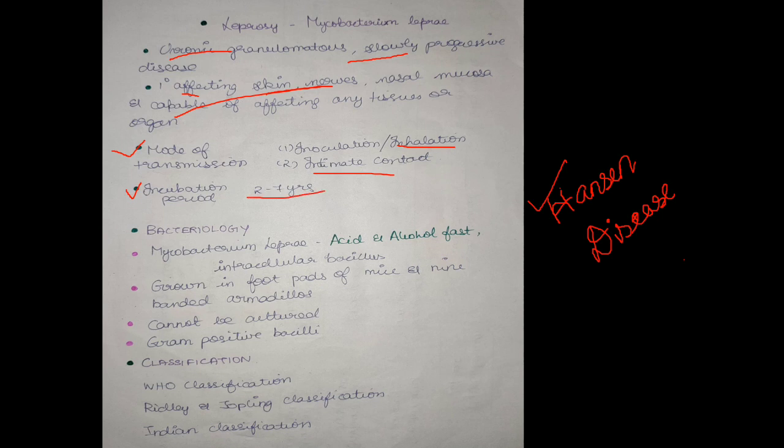Bacteriology: It is caused by Mycobacterium leprae, which is acid as well as alcohol fast, a differentiating factor from Mycobacterium tuberculosis. It is an intracellular bacillus, so cell-mediated immunity plays the major role. It can only be grown in foot pads of mice and nine-banded armadillos, and it is a gram-positive bacillus.